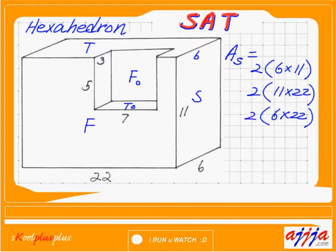The only two areas we didn't count yet are this one. I'm gonna call this one R right here. So R — three times five. Then left-hand side and right-hand side — this one is hiding, we cannot see it. But that's why we're gonna multiply by two.